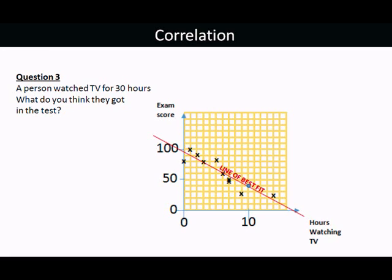Question 3 is a bit trickier. A person watched TV for 30 hours. What do you think they got in the test? Well, if we go to 30 hours on the graph, 10, 20, 30, that would be somewhere down in that region there. If we went by the line of best fit, we would be predicting that they got minus something in the test. Obviously, that doesn't make any sense. Not least because the minimum you would expect would be zero.